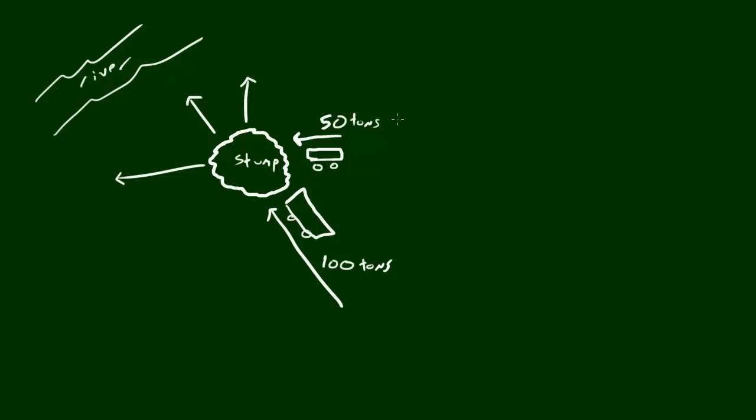And I said, listen Rednecks, you need to do something called Vector Addition. And this is how you do that. Now remember, 50 tons left and 100 tons northwest. So just remember that because I'm about to, well I guess I have space over here to graph it.